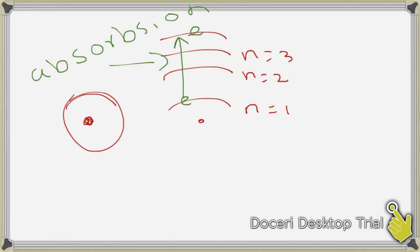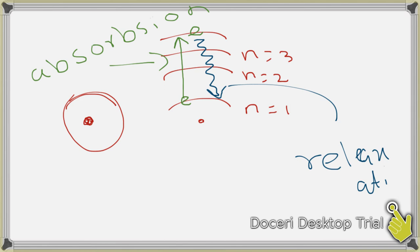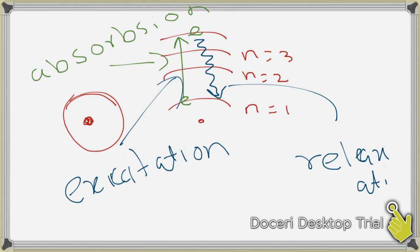When an electron goes to higher energy states, those higher energy states are very unstable. So it needs to release the energy, and the electron releases the energy and comes back to the lower energy states — we call this relaxation. This is relaxation; the going up is called excitation. Excitation absorbs energy; relaxation emits energy.